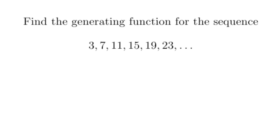When trying to understand a sequence, one thing I might check is the difference between terms. The difference between 3 and 7 is 4, between 7 and 11 is 4, between 11 and 15 is 4 — the difference is constant. If I know something about the sequence of differences, I can usually use that to find the generating function for the original sequence.